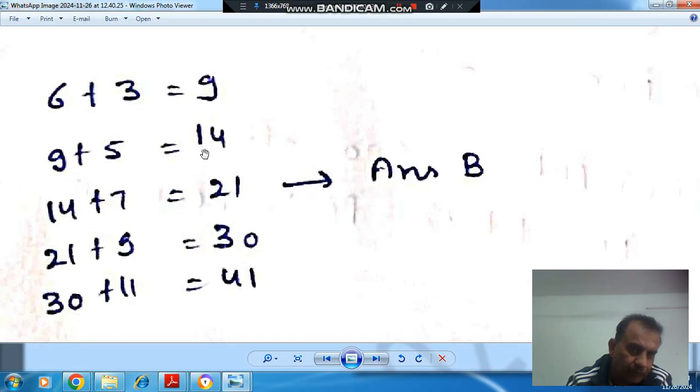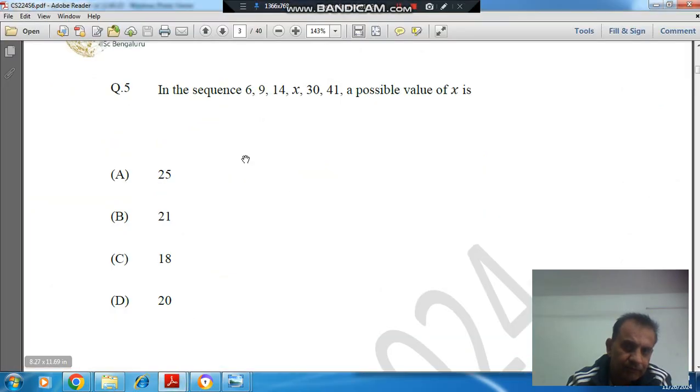So after that 14, we will add 7, it will be 21. And to 21, if we add 9, the next odd number, then we get 30. And to 30, if we add 11, then we get 41. Answer.